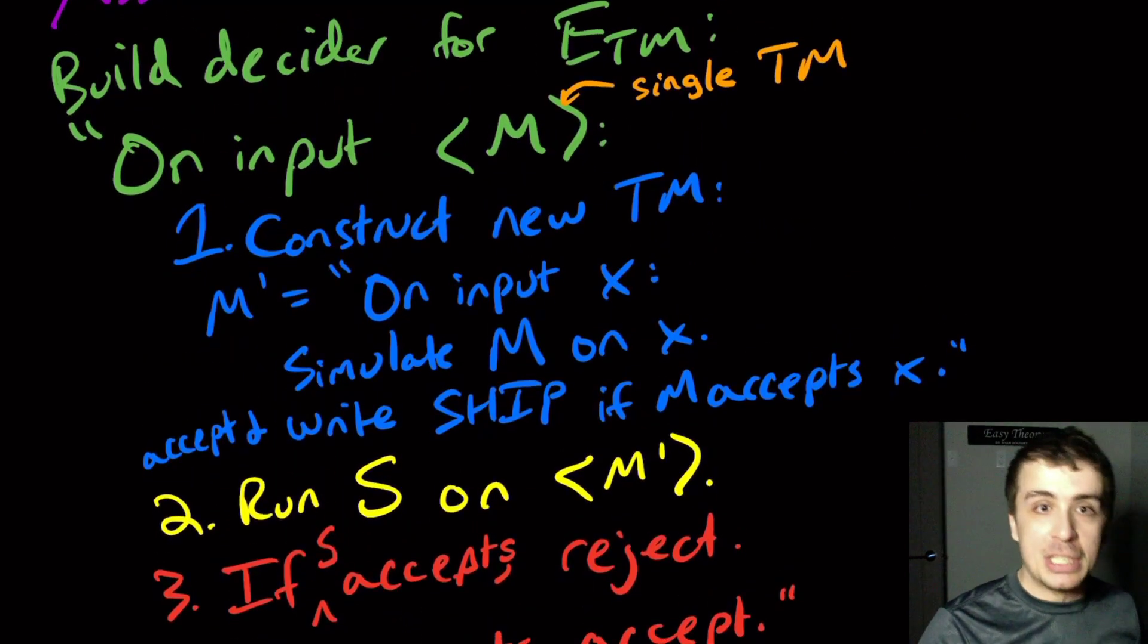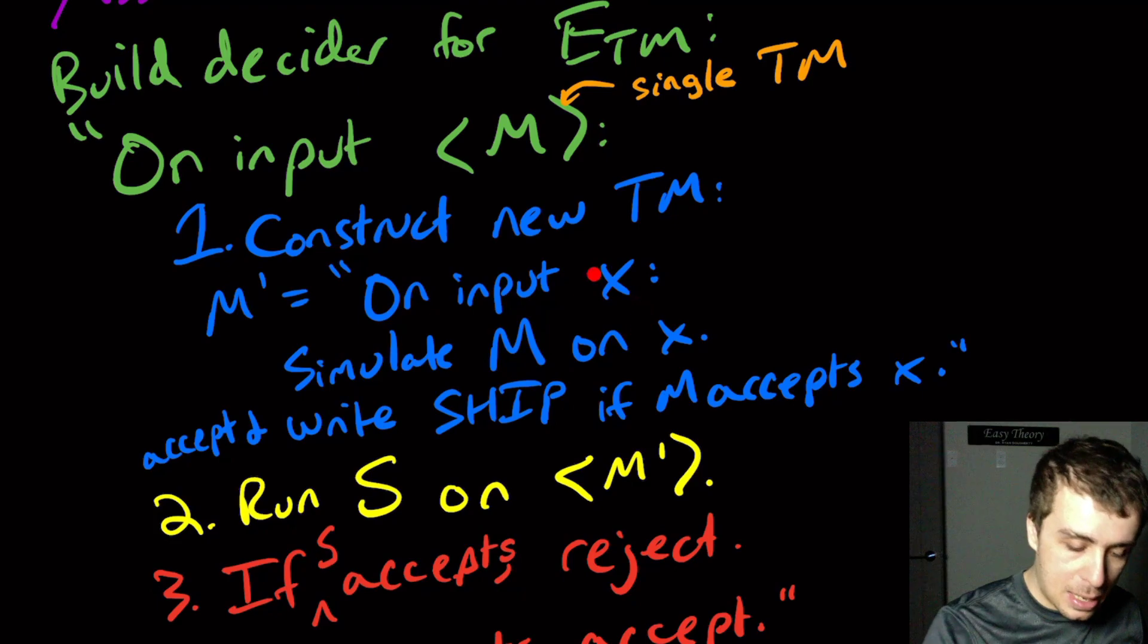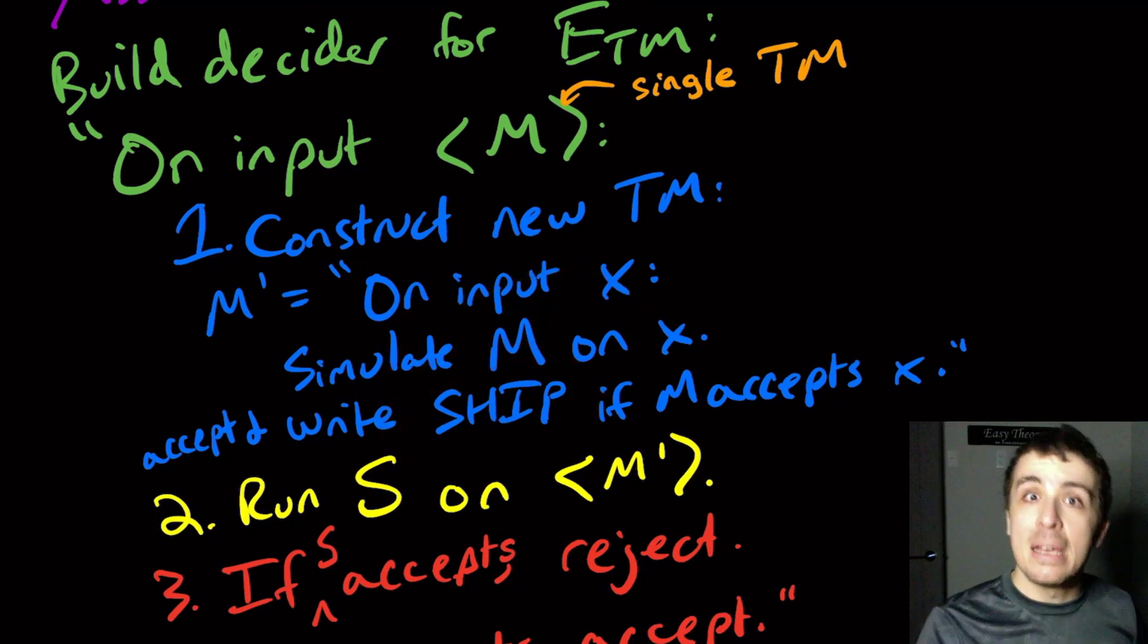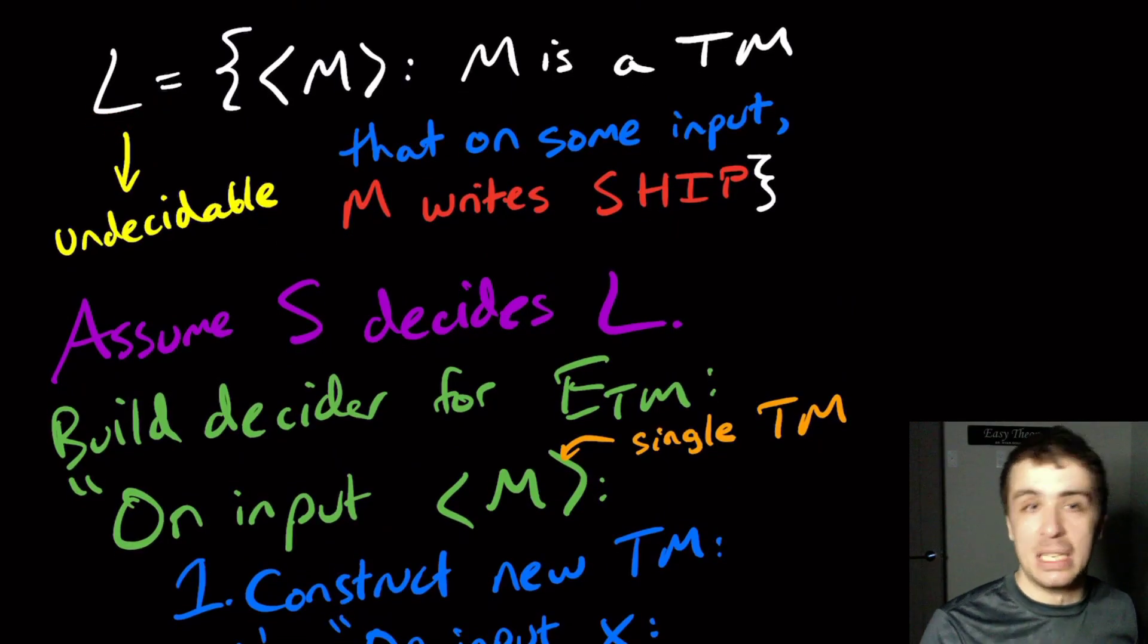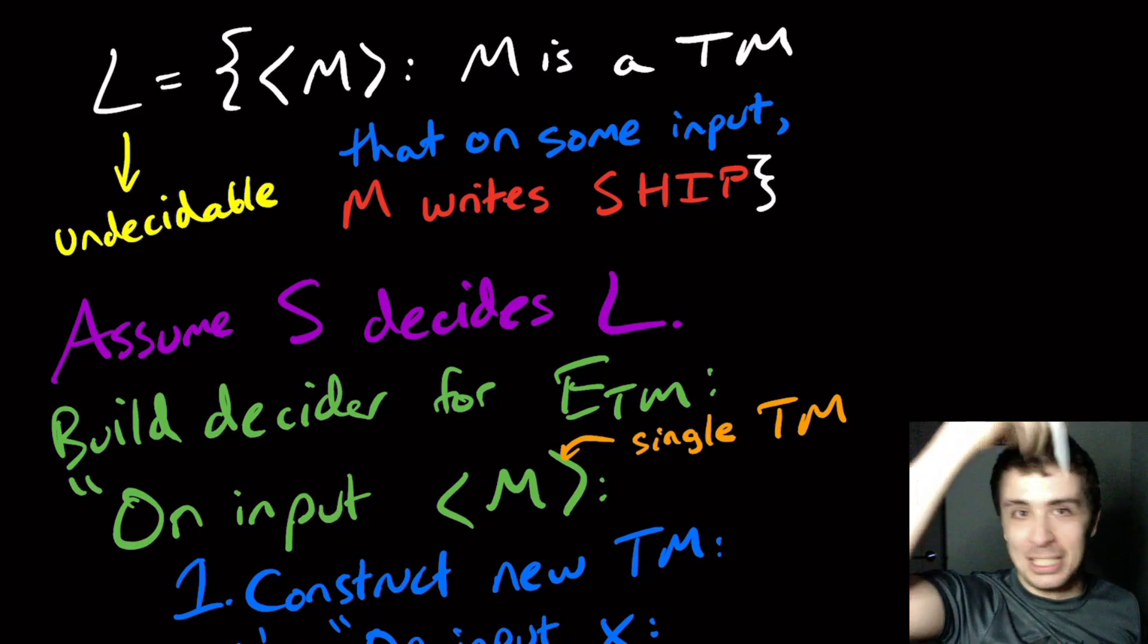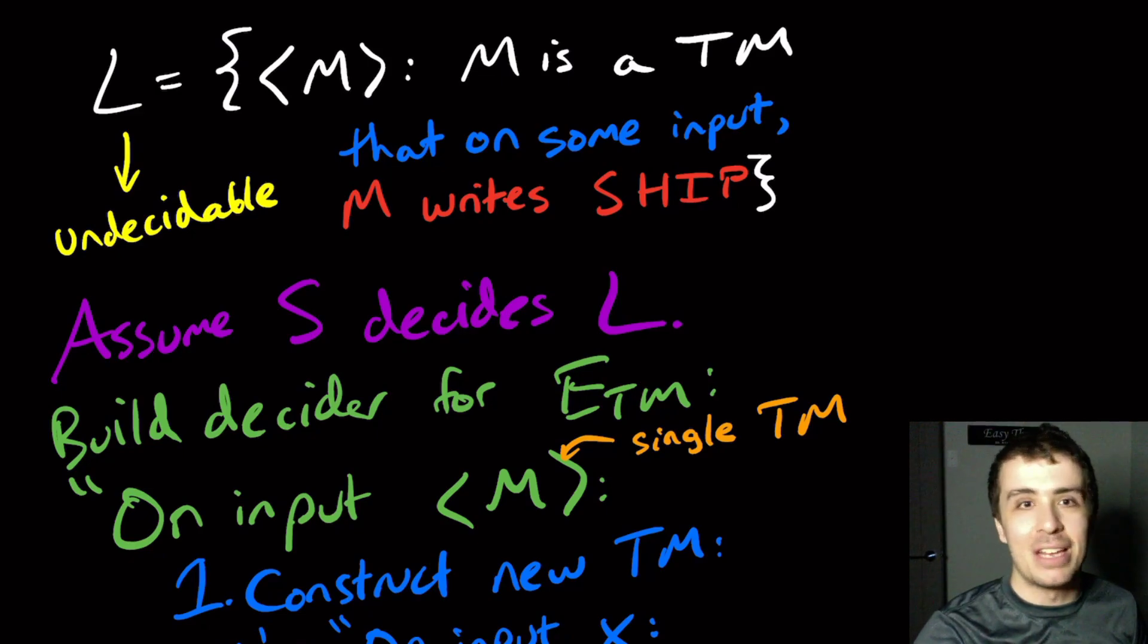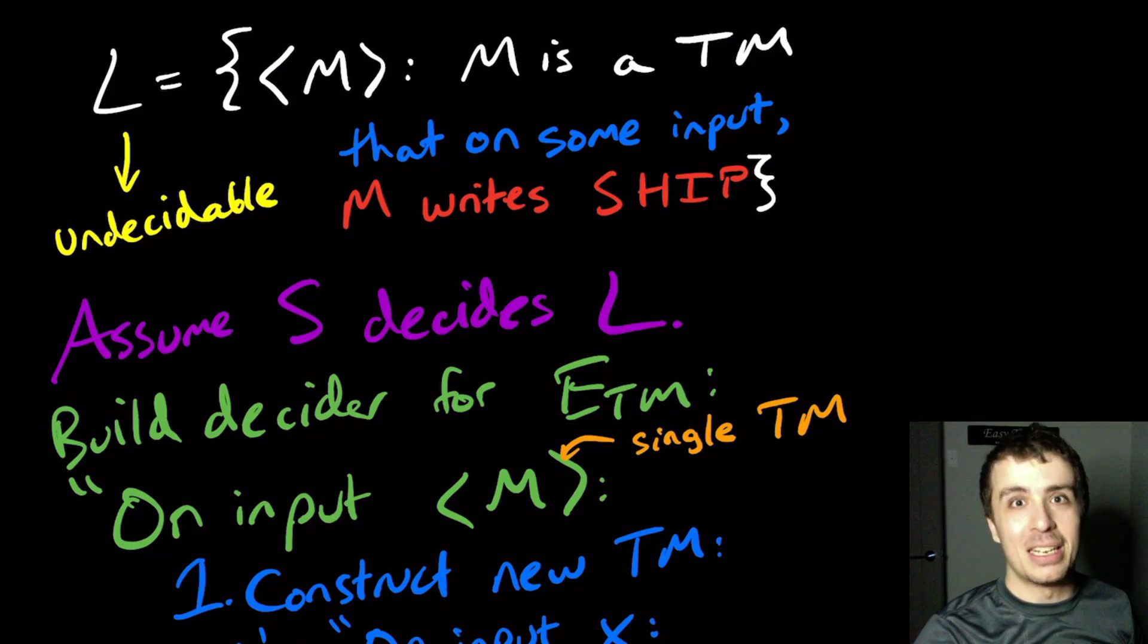And so this tells us that because ETM is undecidable, it can't be that this problem about writing the word ship can be decidable. So that means that the language L right here is undecidable. And so it's impossible to figure out whether our ship is going to be stuck or not. Leave thoughts about stuck ships in the comments down below. Please like the video and subscribe to the channel. There are many other links in the video description if you want to support the channel further. Thanks for watching and I'll see you next time.